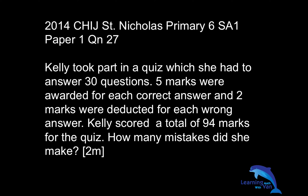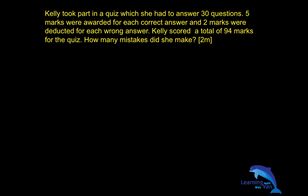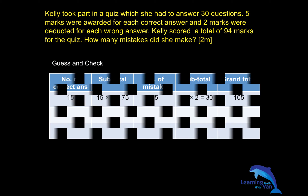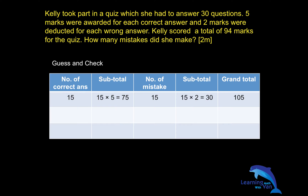This is a very similar question to those about the number of chickens and cows on a farm — they tell you how many legs there are and ask you to find how many chickens, for example. So P3 and P4 students are very familiar with guess and check. You draw a nice table showing the number of correct answers with a subtotal, the number of mistakes with a subtotal, and then a grand total. Students will plug in the figures — starting somewhere in the middle, like 15 correct and 15 mistakes.